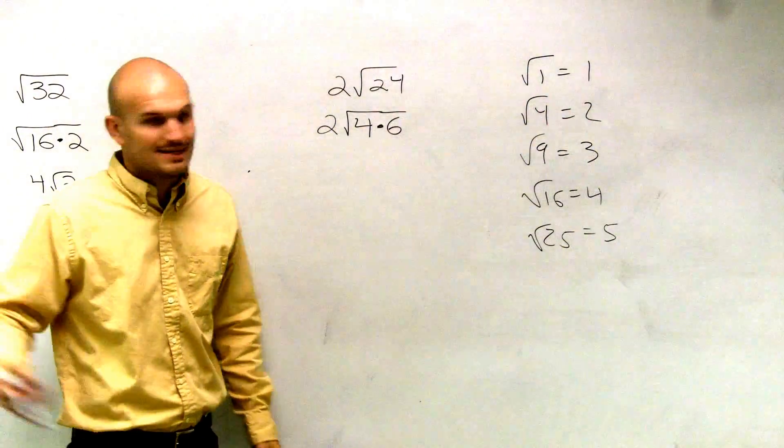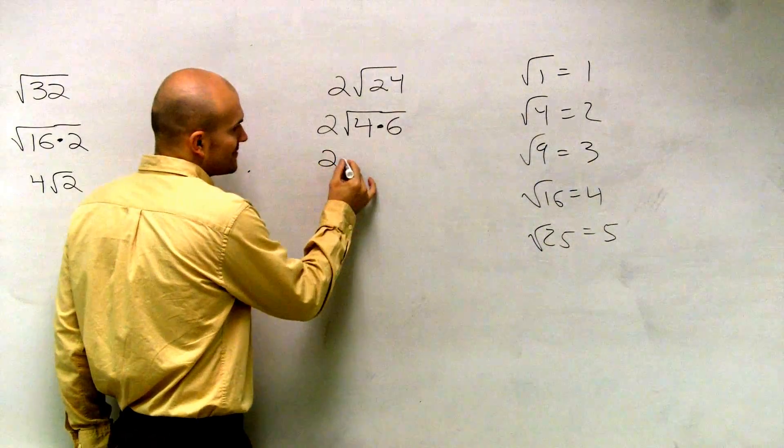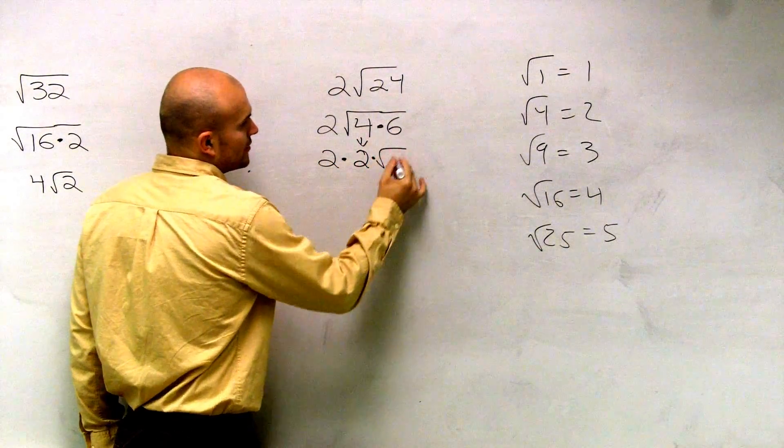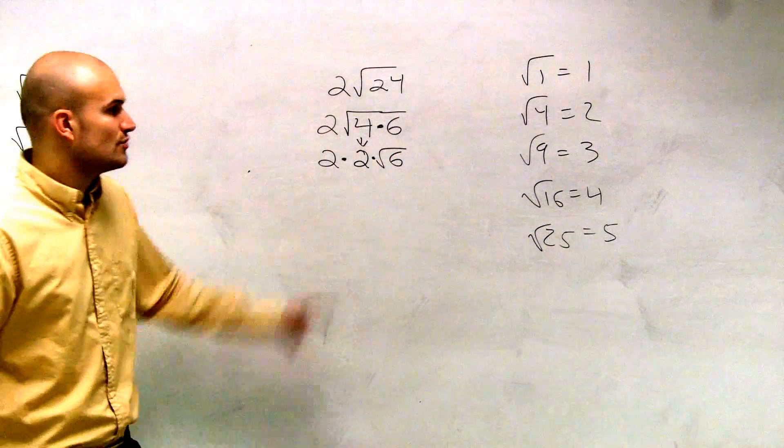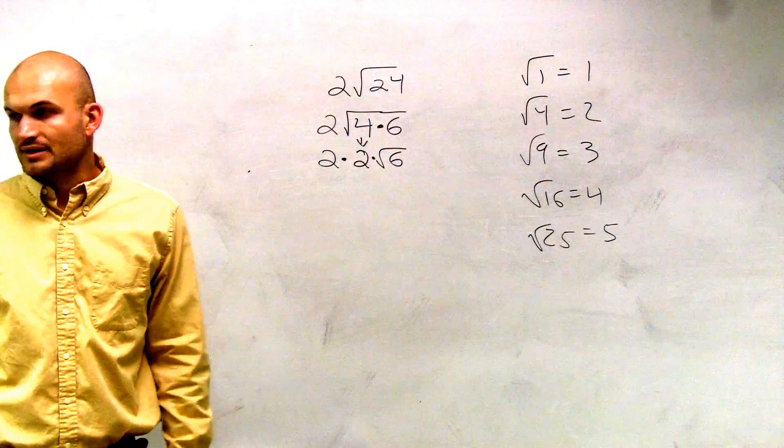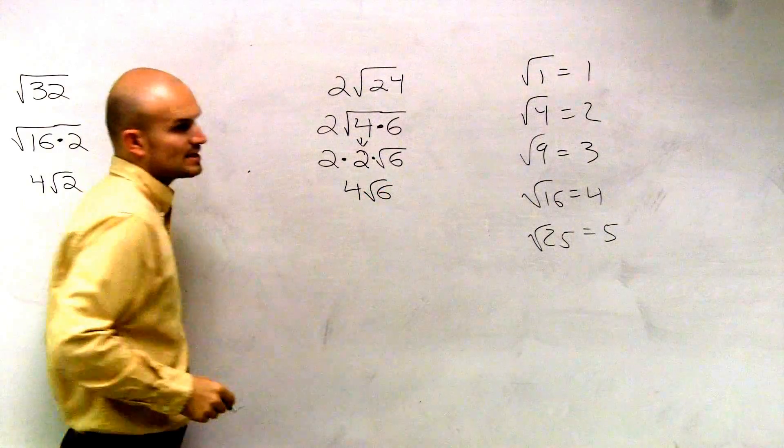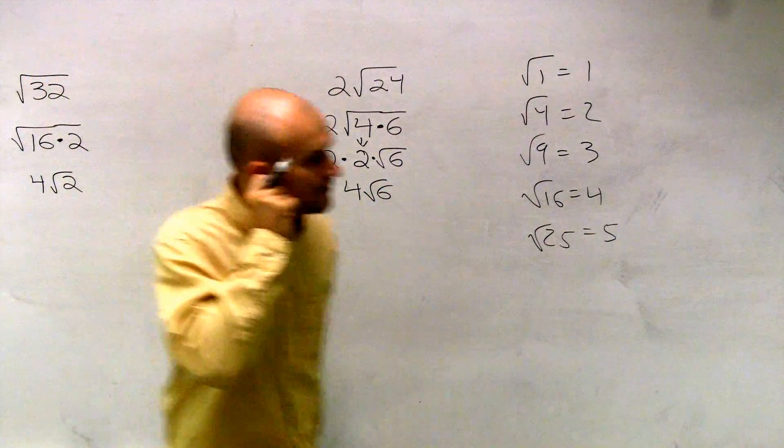So even though that was very easy, this is helpful because now you guys have 2 times 2 times the square root of 6. The square root of 6 still has to remain under there. Well, 2 times 2 is 4 square root of 6. There you go, that's all you have to do.